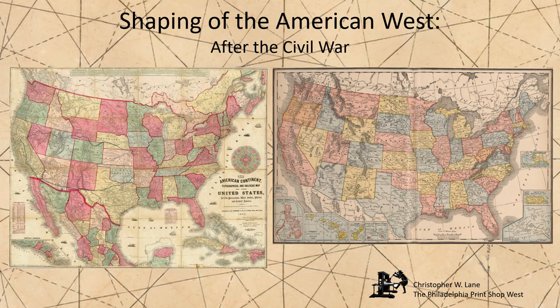Period maps provide a unique perspective on this topic, for they show us the political situation in the country in, as it were, real time, as the borders were drawn or redrawn, even when the borders lasted for just a short time. These lectures will look at the shaping of the American West using original contemporary maps to help illustrate this complex subject.